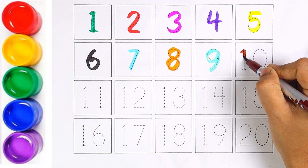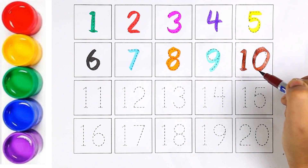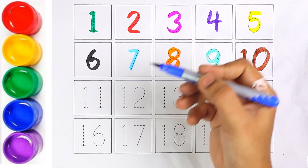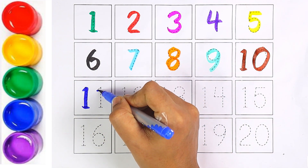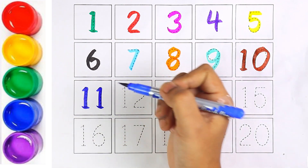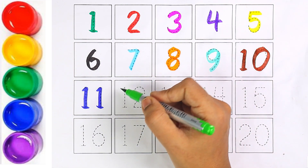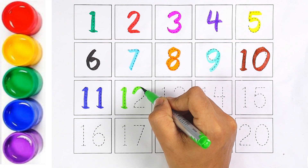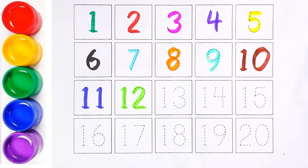Brown color. Number ten. One and zero makes the number ten. Blue color. Number eleven. Light green color. Number twelve. One and two makes the number twelve.